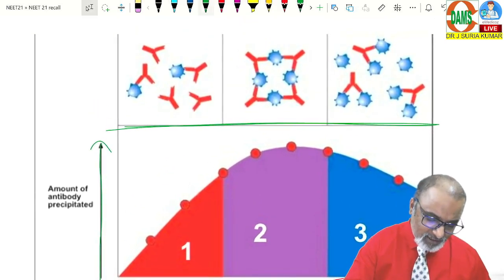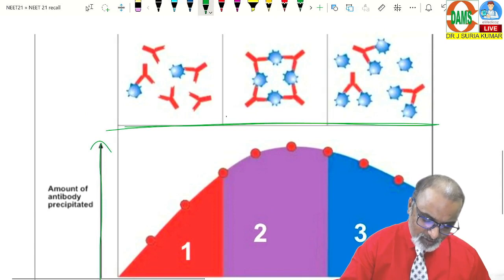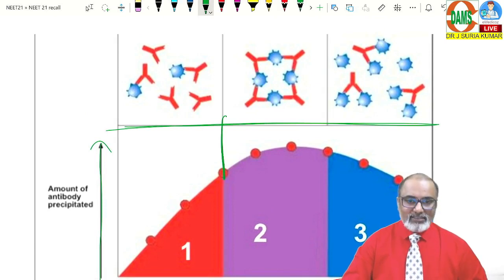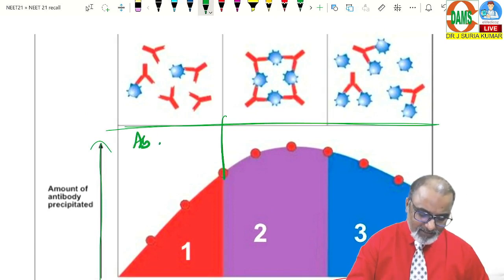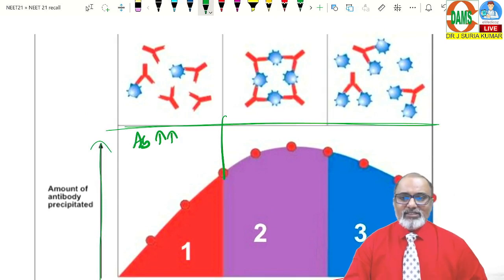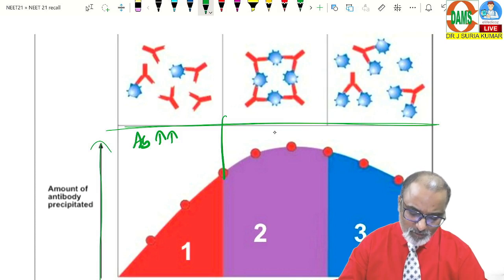In the first zone, see carefully, in the first zone, what is excess? Antibody is excess. That means same amount of antibody. Comparing with antigen, antibody is excess. In this zone, both are equal. In this zone, antigen is excess.